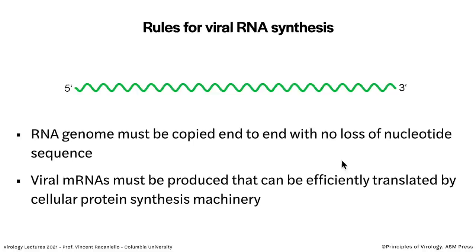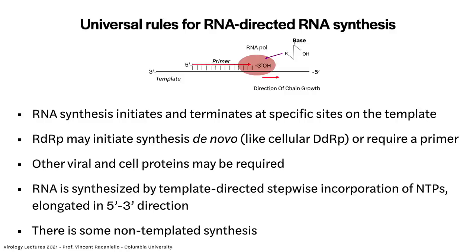Two general rules about RNA synthesis: first, the RNA genome has to be copied from end to end with no loss of sequence. You can make mRNAs that are shorter than the genome, but if you want to make more genomes, they have to be complete copies. Otherwise you can't make a new virus particle. Second, you also have to make mRNAs that can be translated. For some viruses the genome is the same as mRNA, like poliovirus. But for negative-strand viruses it's not, so mRNAs have to be made.